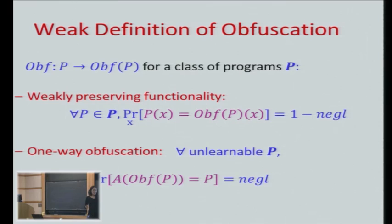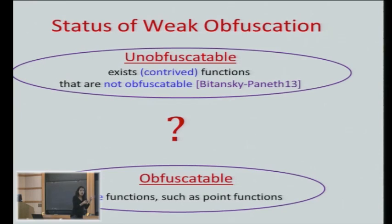Here's an example: take a signing algorithm. There's some secret key sitting there, used to sign messages. I don't want someone who's looking at the code to see the secret key — they're just supposed to be able to feed messages and get signatures. My goal is that the obfuscated circuit will not allow you, from looking at it, to find the secret key. For this weak definition, the state of the art was exactly the same — just the contrived functions.